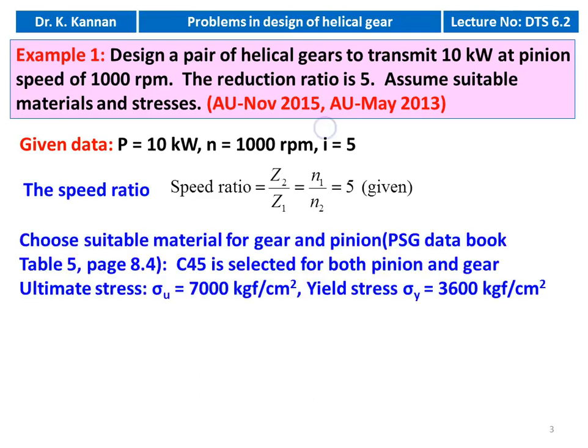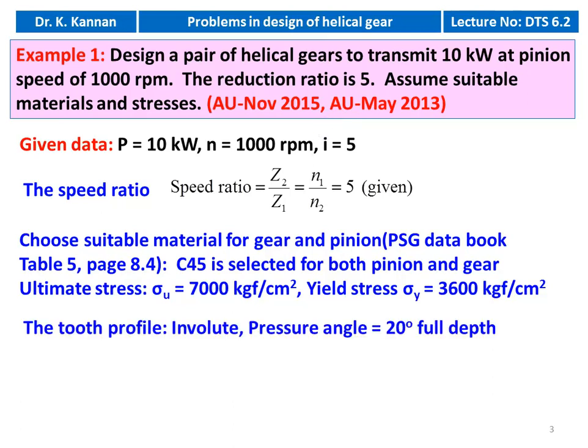The speed ratio is given in the problem. We select C45 as the material for both gear and pinion, and we take the properties of C45 from the design data book. Ultimate tensile stress is 7500 kg/cm² and yield stress is 3600 kg/cm². We assume involute profile with a pressure angle of 20 degree full depth.